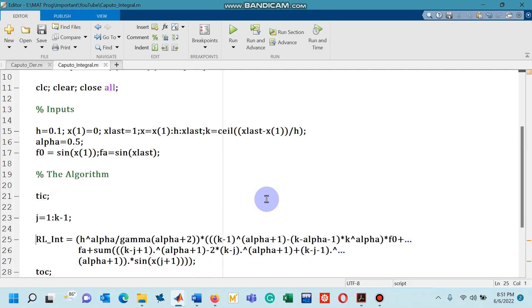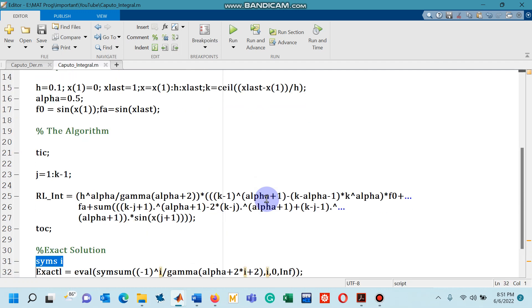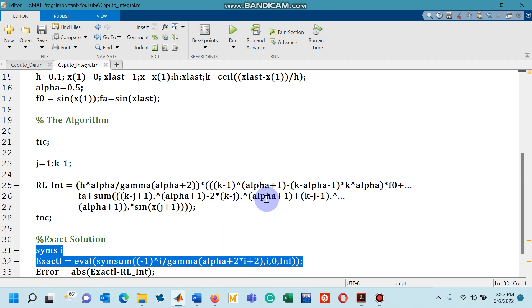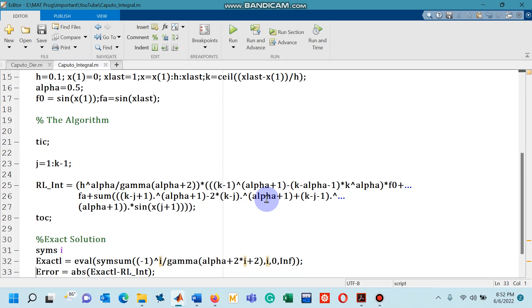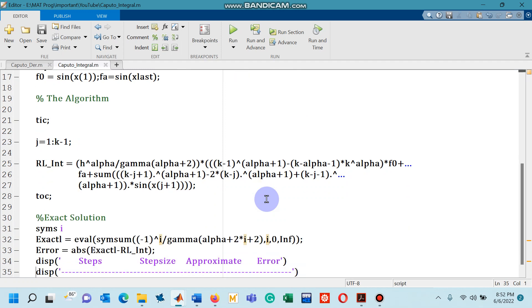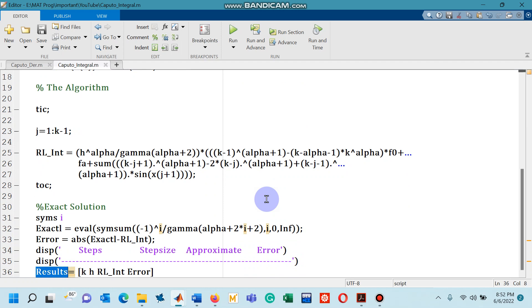So after writing these things I have mentioned the exact solution as it was shown in the research paper. Line number 33 absolute errors are computed and line number 36 the required terms are being computed like kh, approximated value along with the absolute error.